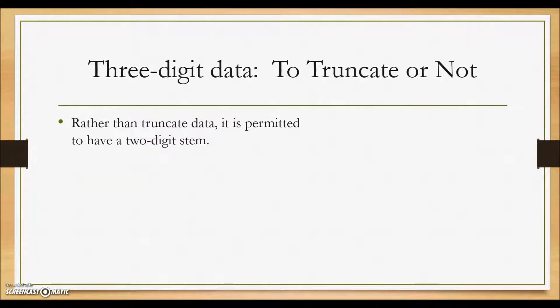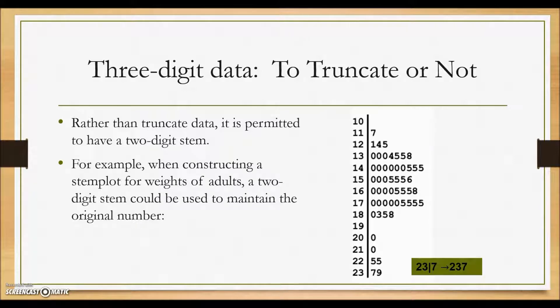Rather than truncate data, though, it is permitted to have a two-digit stem. And here's an example for weights of adults, a two-digit stem was used to maintain the original numbers.